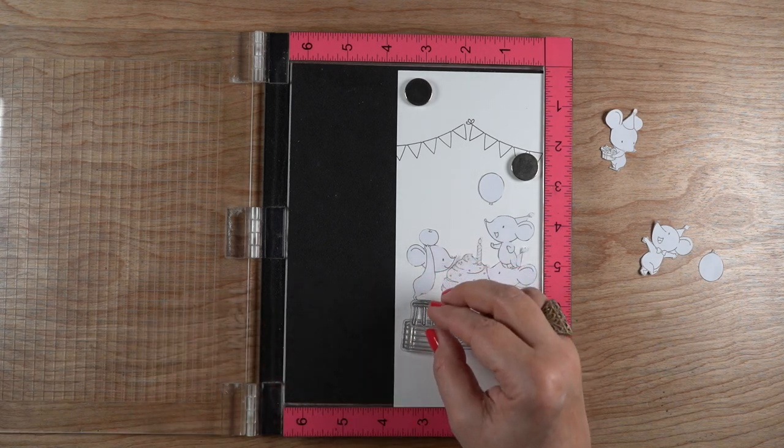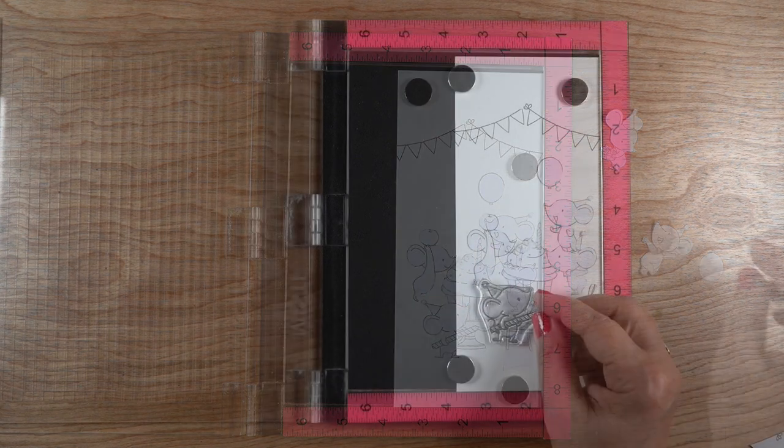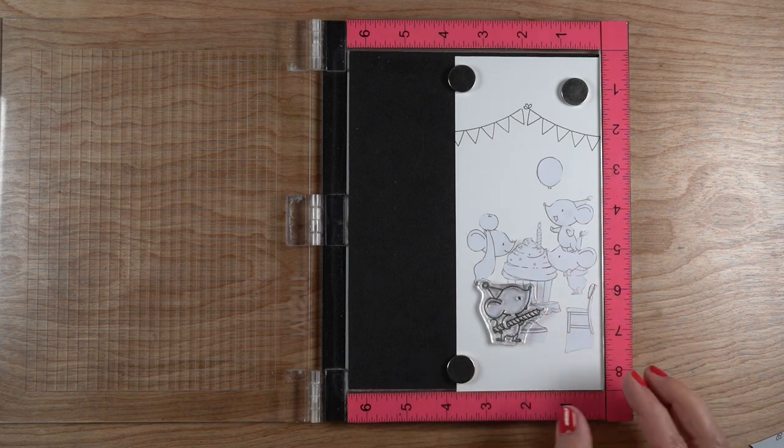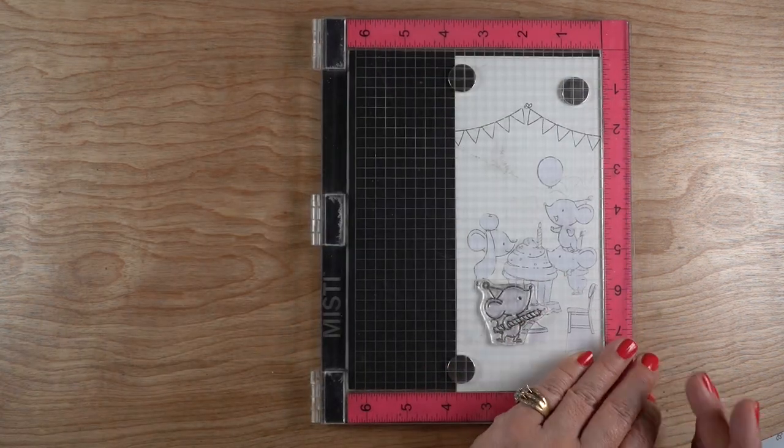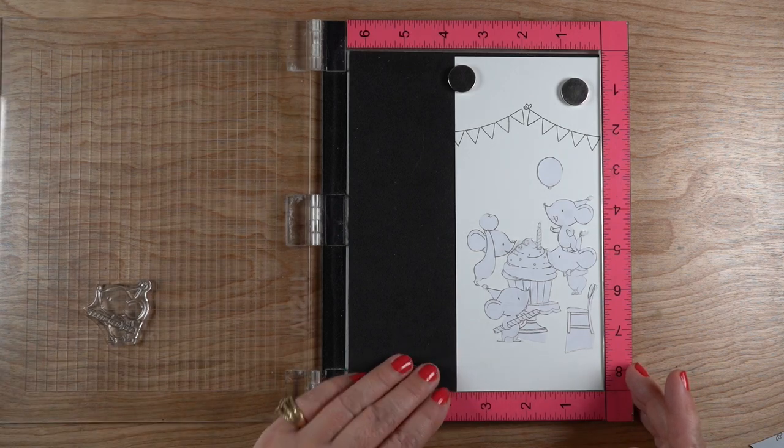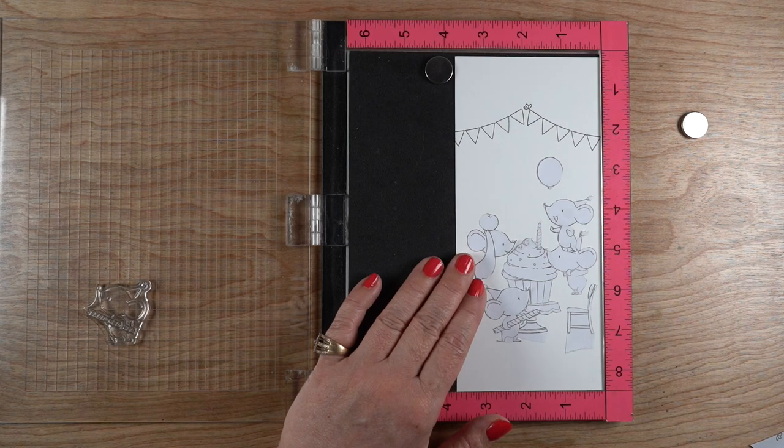In the stamp set there's chairs, there's stools, there's these little boxes. For this one I didn't mask these two pieces out, but I checked to make sure that I could stack up a box and a stool and still make it look right, and it was going to work, so I didn't bother using masks for that portion.